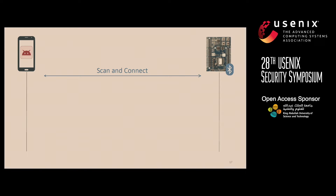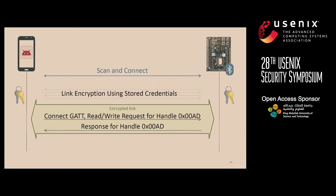Now let's say our good app disconnects and our malicious application scans for and connects to the device. What we saw from Android BLE logs is that as soon as the connection takes place, the Android operating system automatically encrypts the link, presumably using the credentials that were generated during the previous pairing process. This means that the malicious application has this automatic encrypted link over which it can issue read-write requests for the pairing-protected characteristic and get valid responses. The user won't be aware because link re-encryption usually takes place silently.